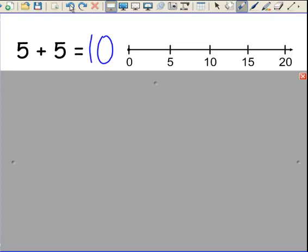If a student suggests starting at 5 and then counting on 5 more, model it like this. But then ask, does anyone have a different strategy that doesn't include counting on 1 by 1? You're really trying to help them move beyond that.